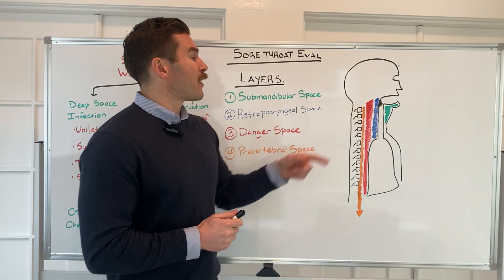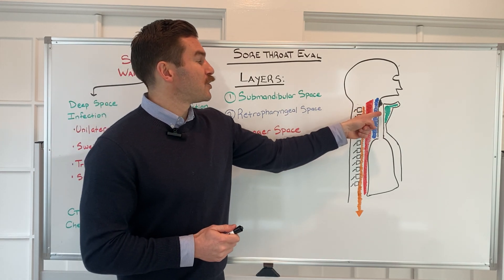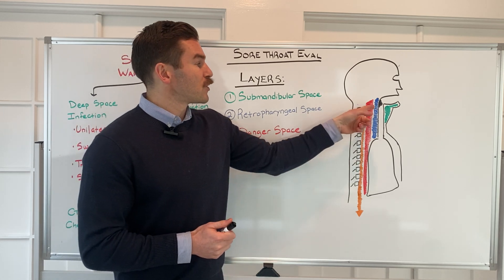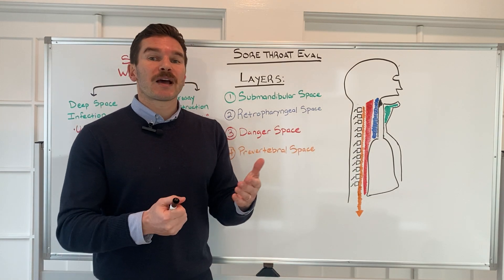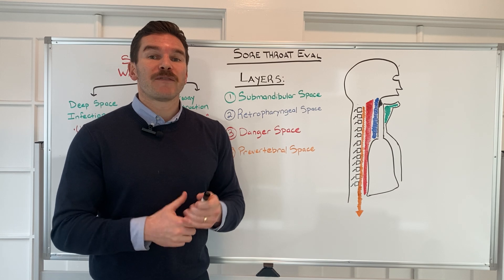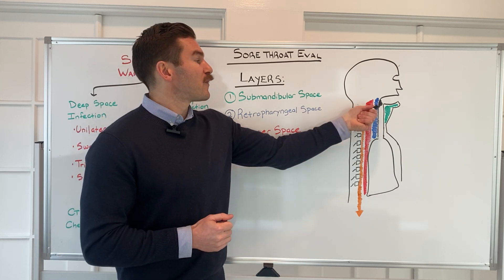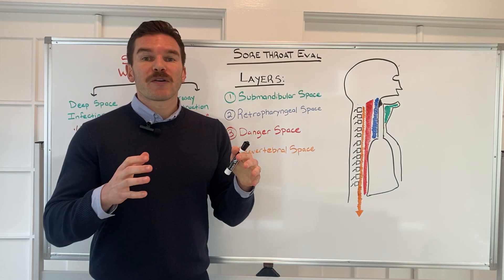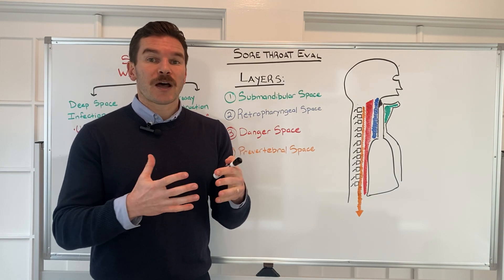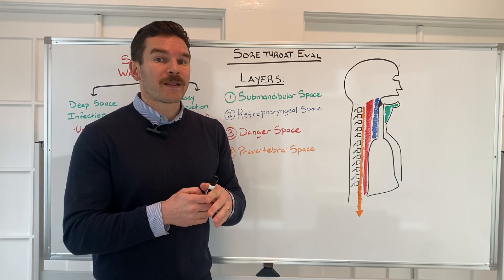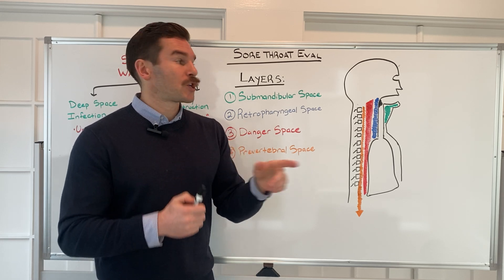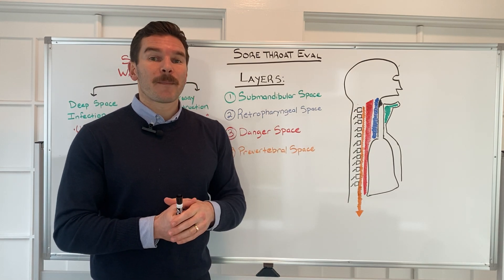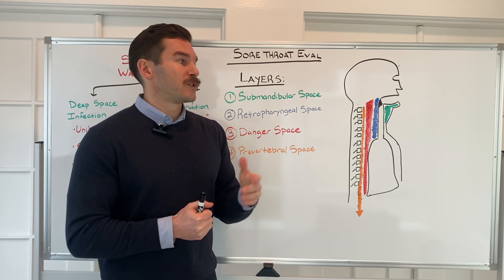There are four key layers to think about in addition to the airway itself. First, when thinking about complications of a throat infection, we have to consider the possibility of airway compromise. Significant tonsillar or pharyngeal swelling can lead to obstruction of the airway and impending airway compromise, which can be a medical emergency.